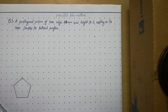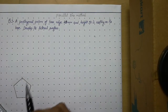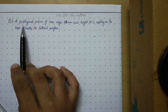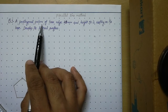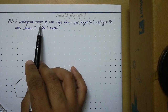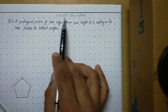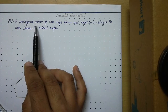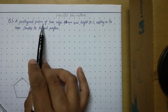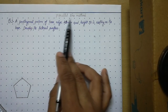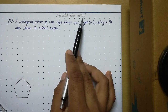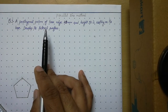Hello students, today we will talk about our next question on development of surface. It is related to a pentagonal prism. In this case we will again use the parallel line method. Whenever we have to solve development of surface for a cylinder or prism, we follow this method called the parallel line method.